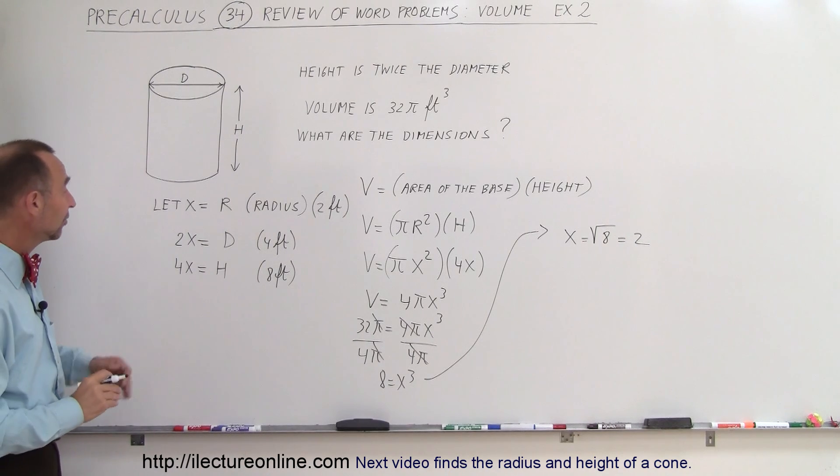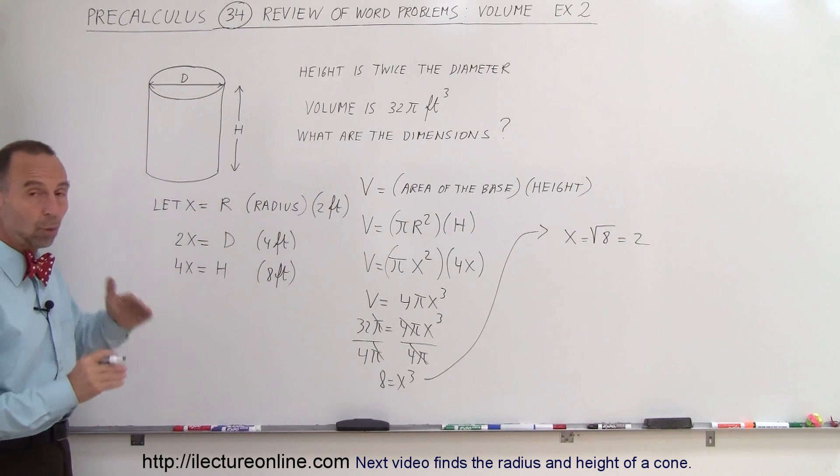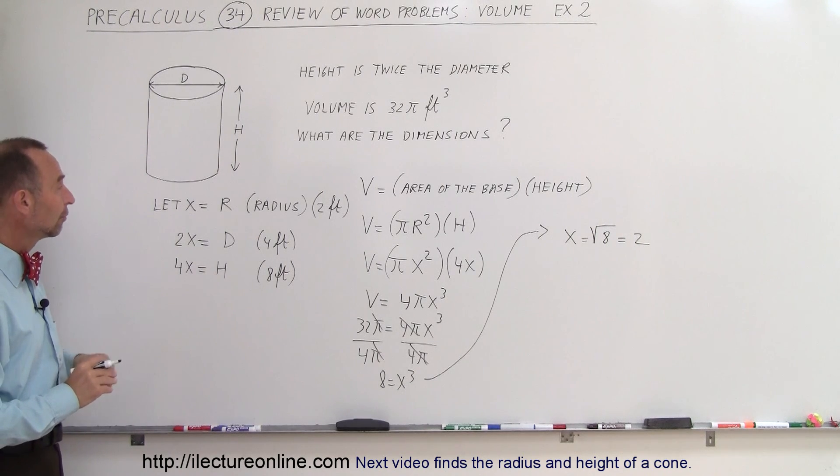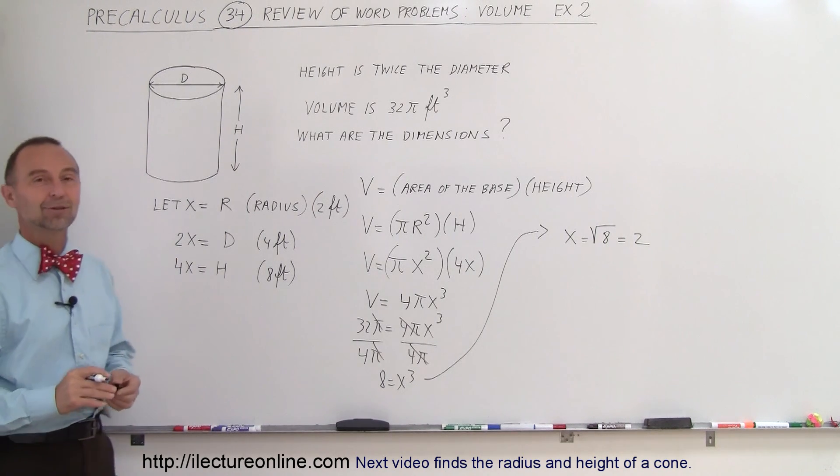That's how we do that. Again, the idea is that you let x equal the smallest quantity. In this case, radius would be the appropriate conversion for x, and that's how we solve a problem like that.